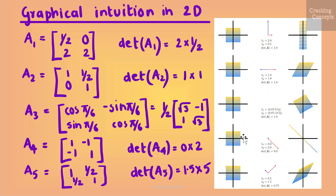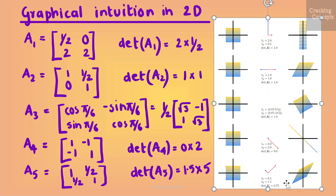The fourth matrix A4 represents a mapping in the standard basis that collapses a 2-dimensional domain into 1 dimension. Since one eigenvalue is 0, the space in the direction of the blue eigenvector, which corresponds to λ1 = 0, collapses, while the orthogonal red eigenvector stretches space by a factor of λ2 = 2. Therefore the area of the image is 0. The fifth matrix is a shear and stretch mapping that shrinks the space by 75%, since det = 1.5 × 0.5 = 3/4. It stretches along the eigenvector of λ2 by a factor of 1.5 and compresses along the orthogonal eigenvector by a factor of 0.5.